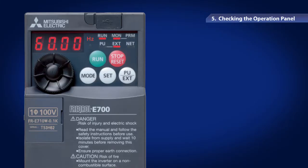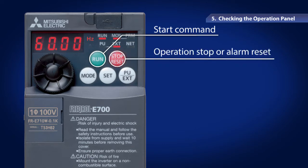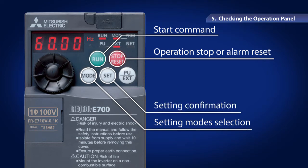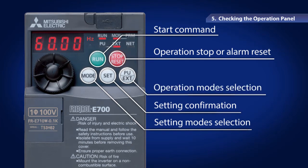Use the Run button for the Start Command input, the Stop Reset button for operation stop or alarm reset, and the Mode button for selection between the setting modes. The Set button can be used for confirming and saving each setting, and the PU EXT button for switching the operation modes.